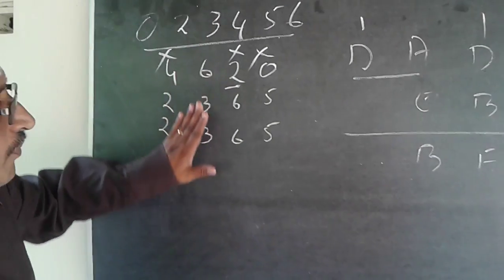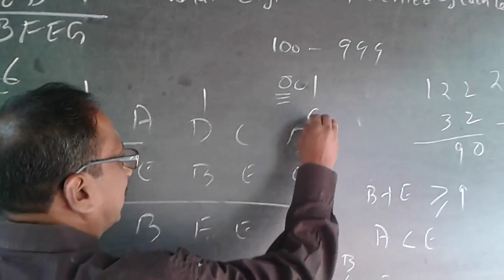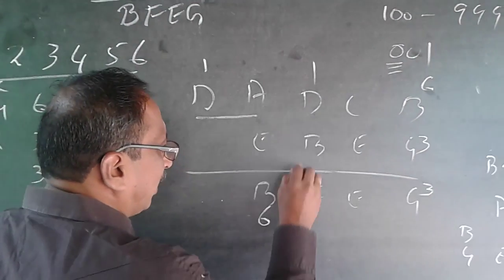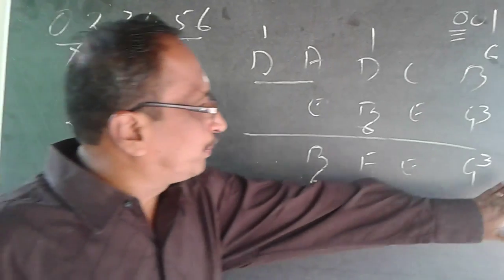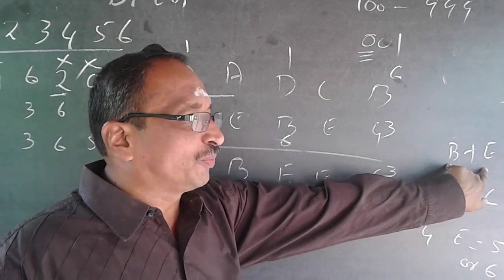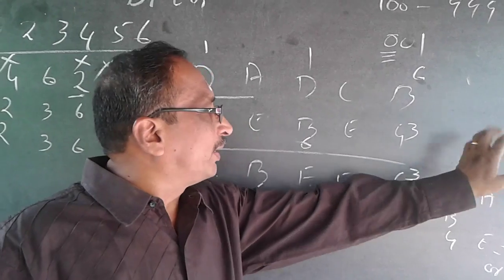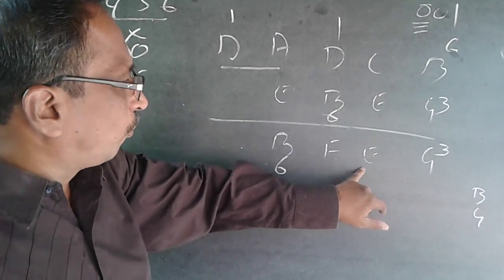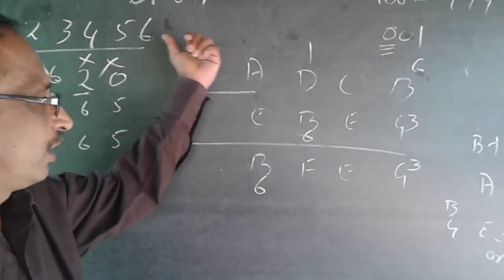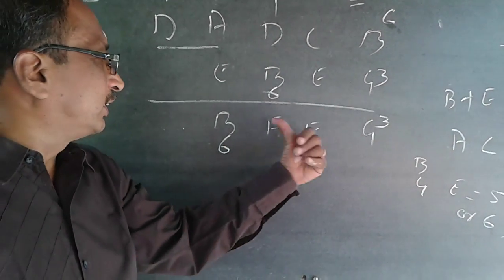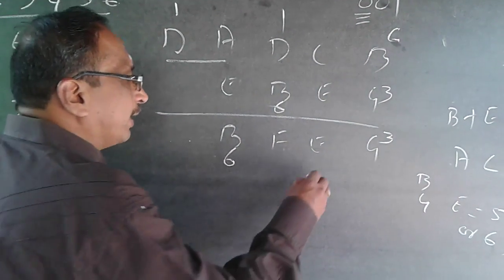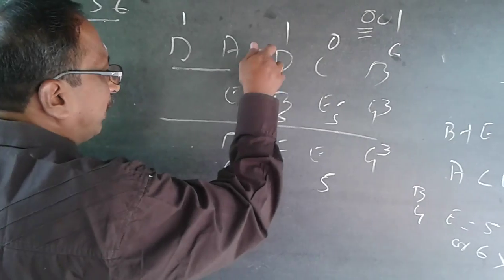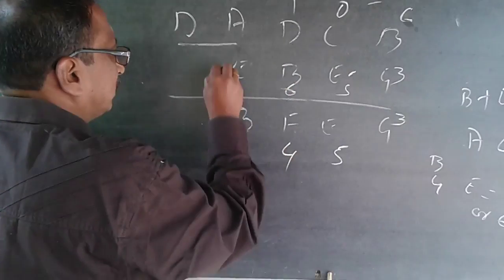So B must be 6 and G must be 3. Wherever I have B it will be 6; wherever I have G it will be 3. Since B is 6, from B plus E ≥ 9, checking E=4: 4 plus 4 gives C as 8, which I don't have — ruled out. 6 is already given. The only number possible is E equals 5. So A becomes 0, and with lending 1 it becomes 10, so 10 minus 6 equals 4, meaning F equals 4. If E is 5, C becomes 2.